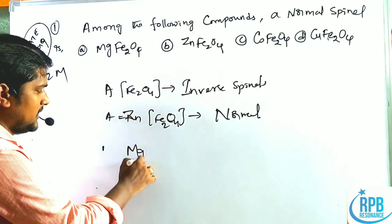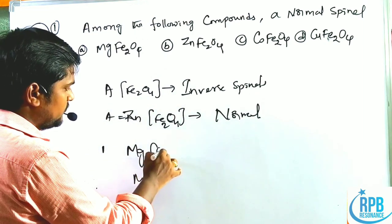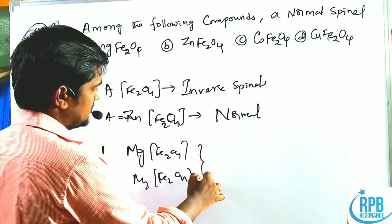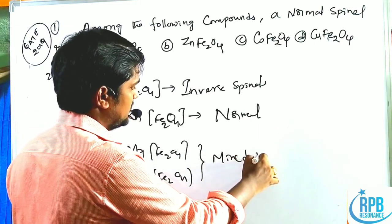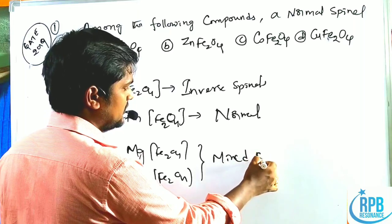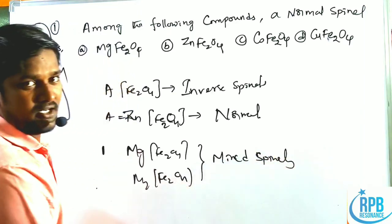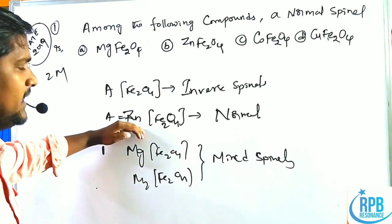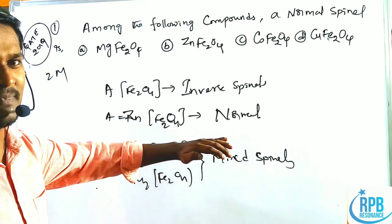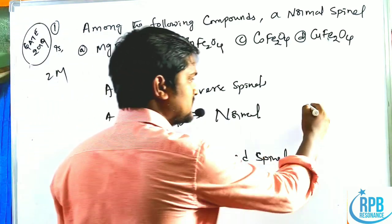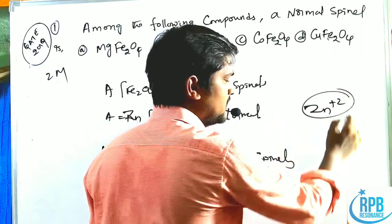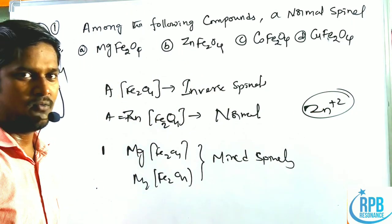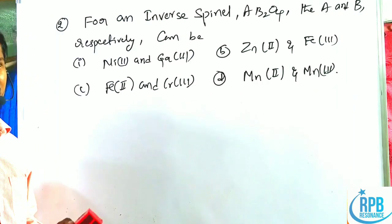Another hint: MgFe₂O₄ and MnFe₂O₄ are mixed spinels. They did not give answer information regarding those, but since the question asks only about normal spinels, zinc is the answer — Zn²⁺ always forms a normal spinel only.